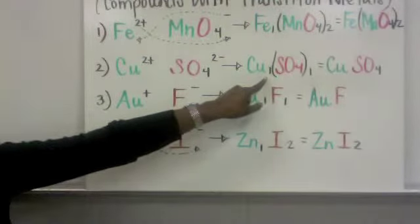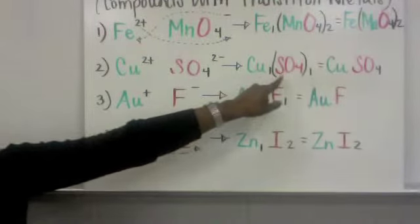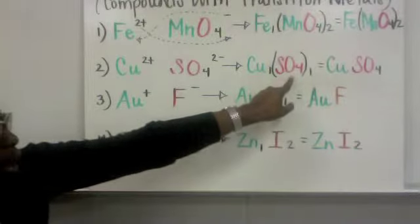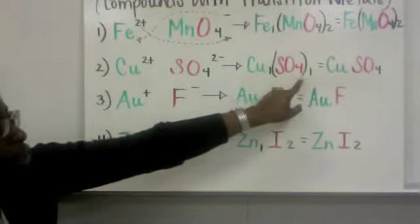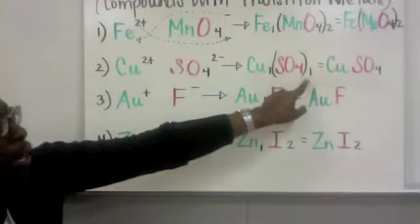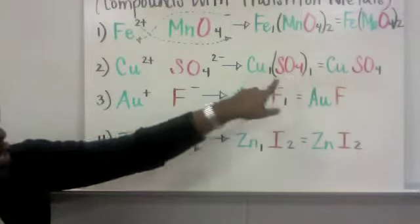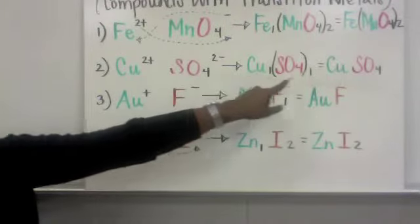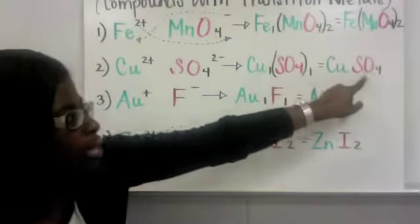Copper has one atom. You open your bracket. You have one atom of sulfur—I'm sorry, four atoms of oxygen. You close your bracket. But you only need one of the entire sulfate to balance out one atom of copper. So when you write your formula, CuSO4.